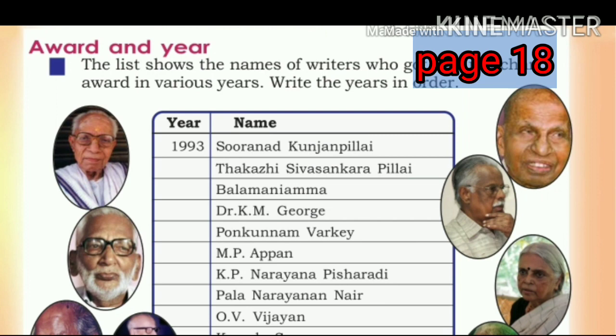Award and Year. The list shows the names of writers who got the 11,000 award in various years. Write the years in order.